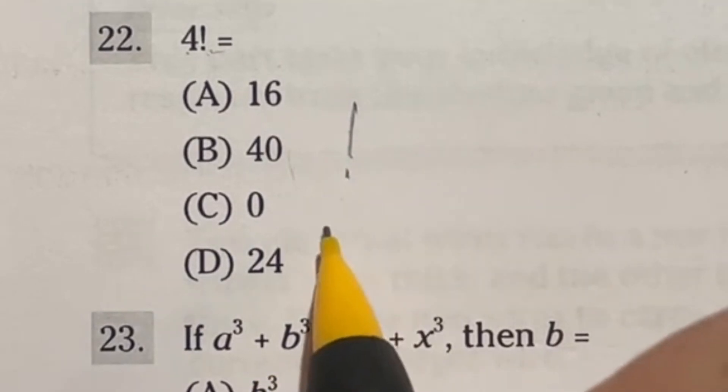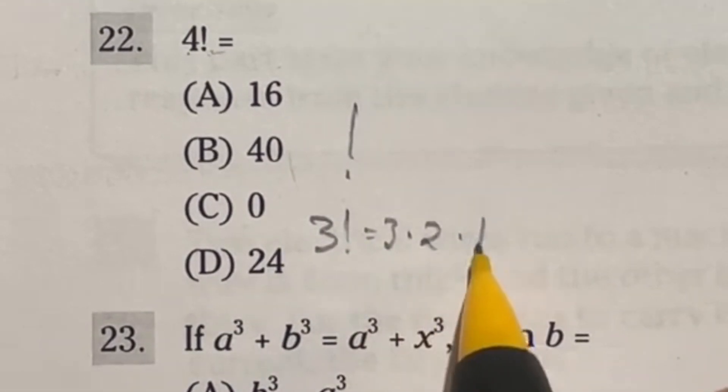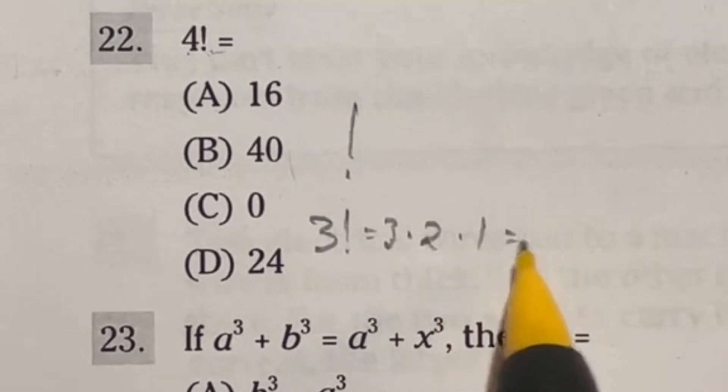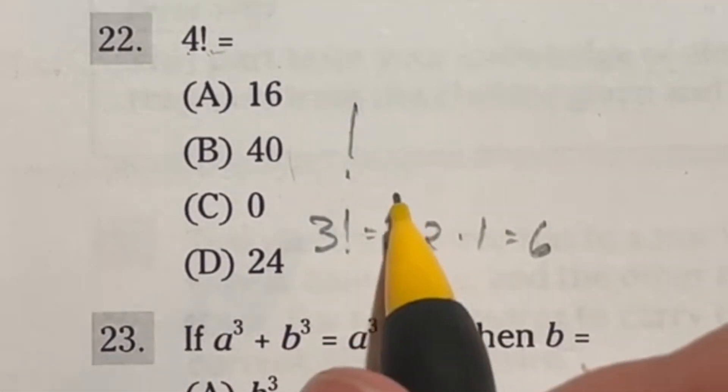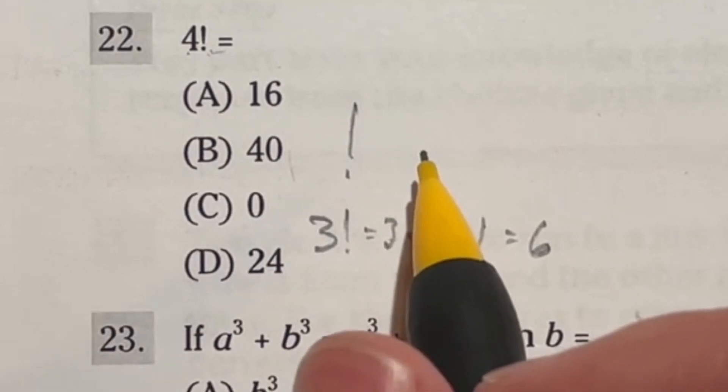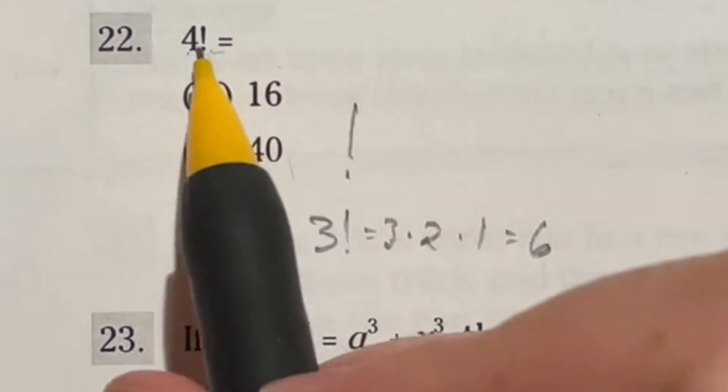So for example, if I did three factorial, that means I would do three times two times one. So three times two would be six times one would just be six total. So this is how you do factorials. It's used a lot in combinations, or other types of like gambling situations, permutations, things like that. But just some math and probability stuff.